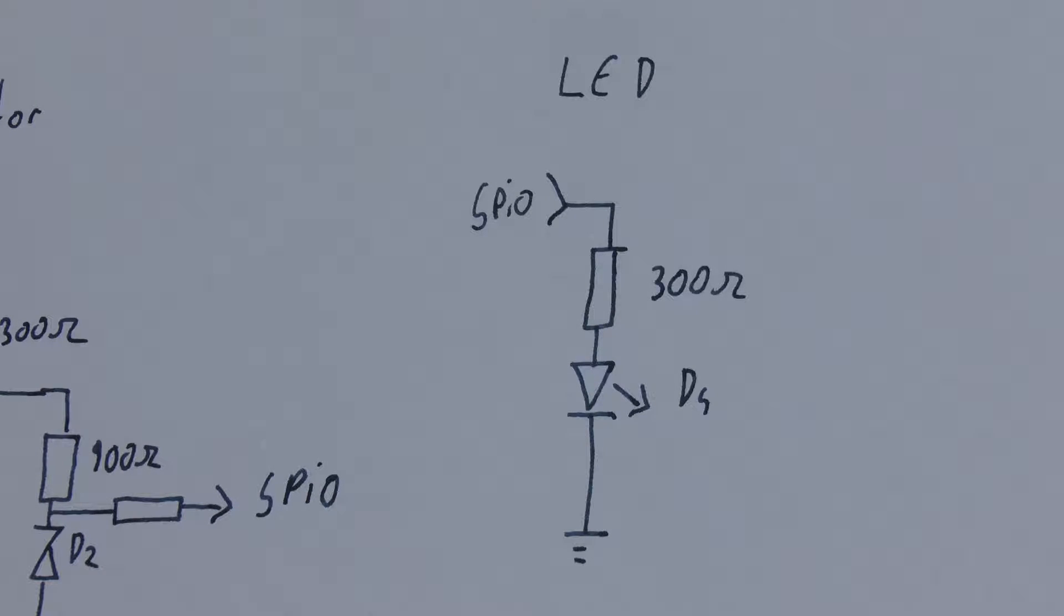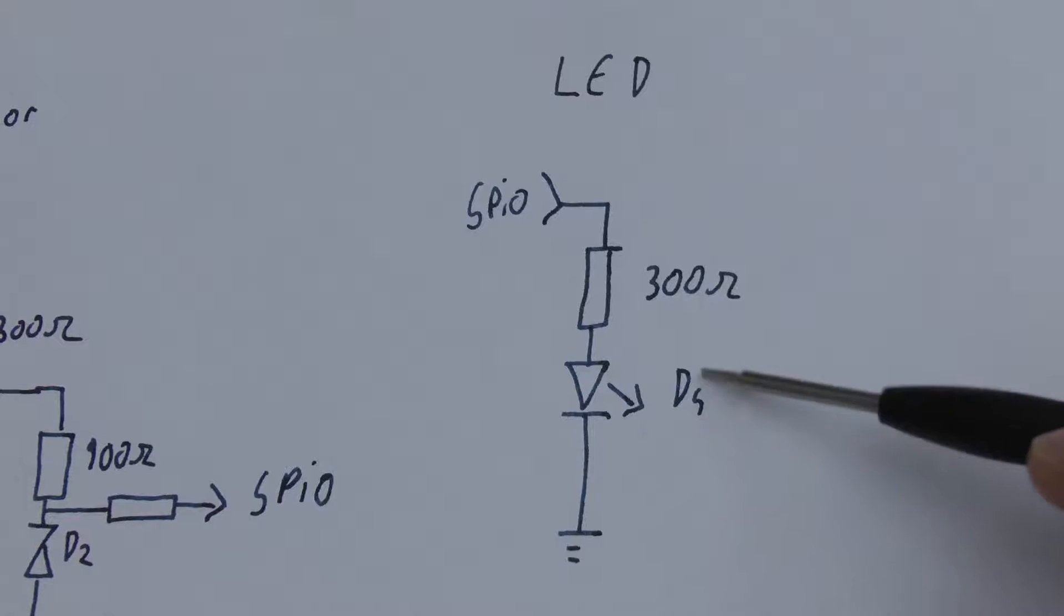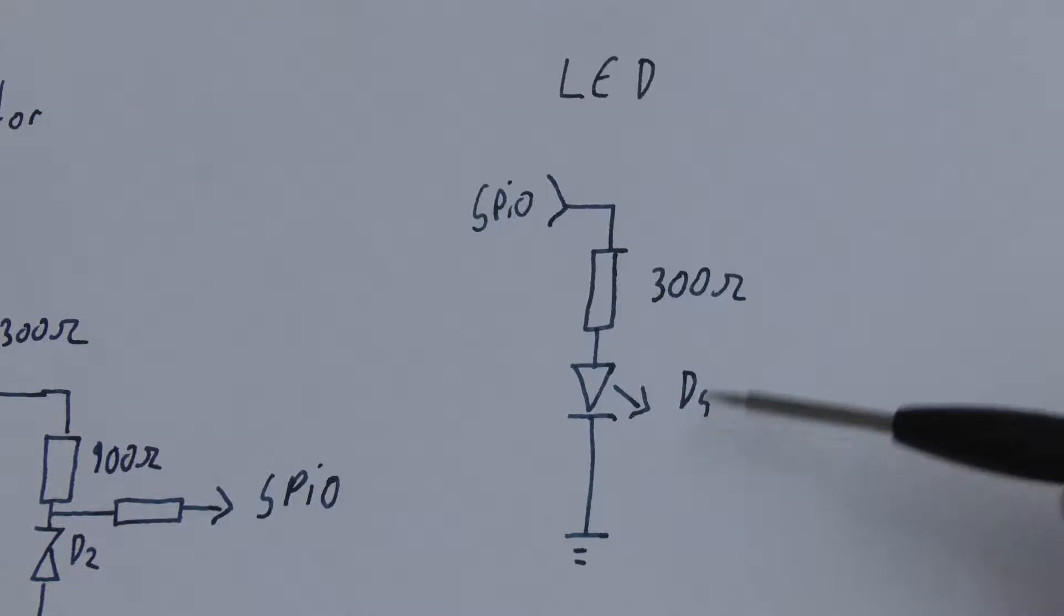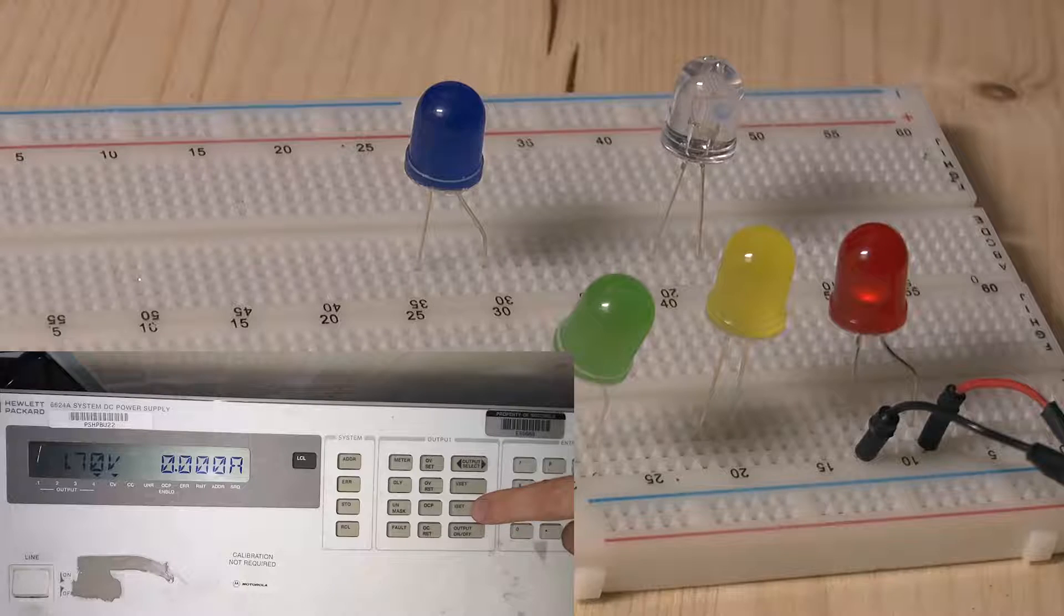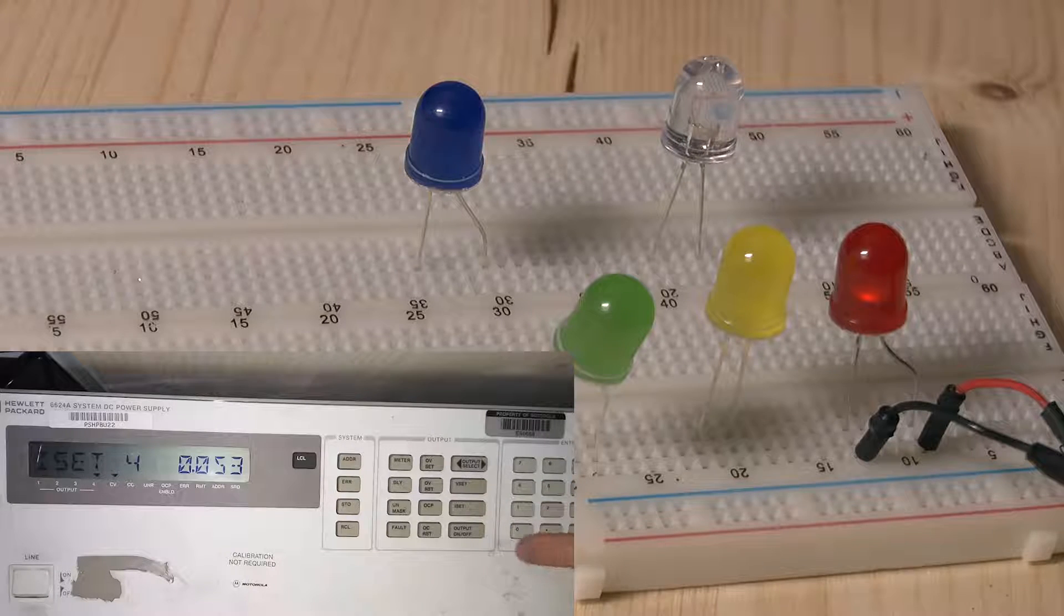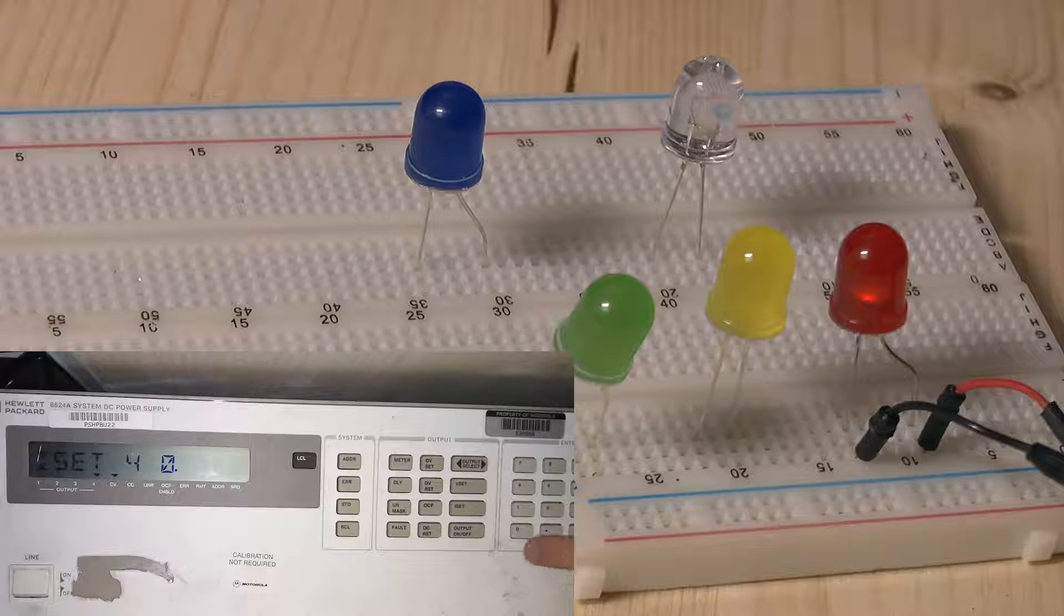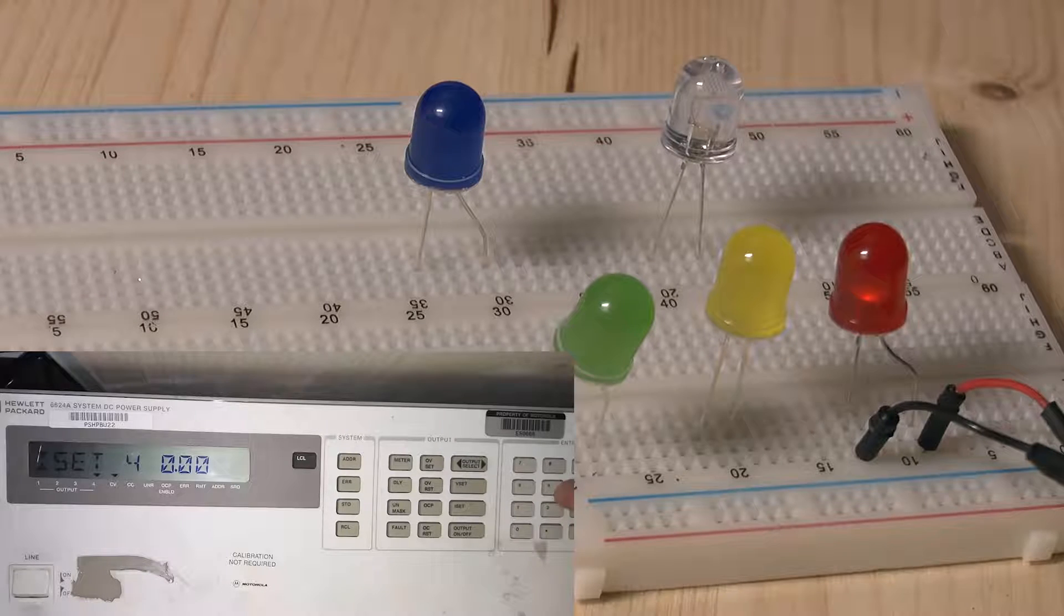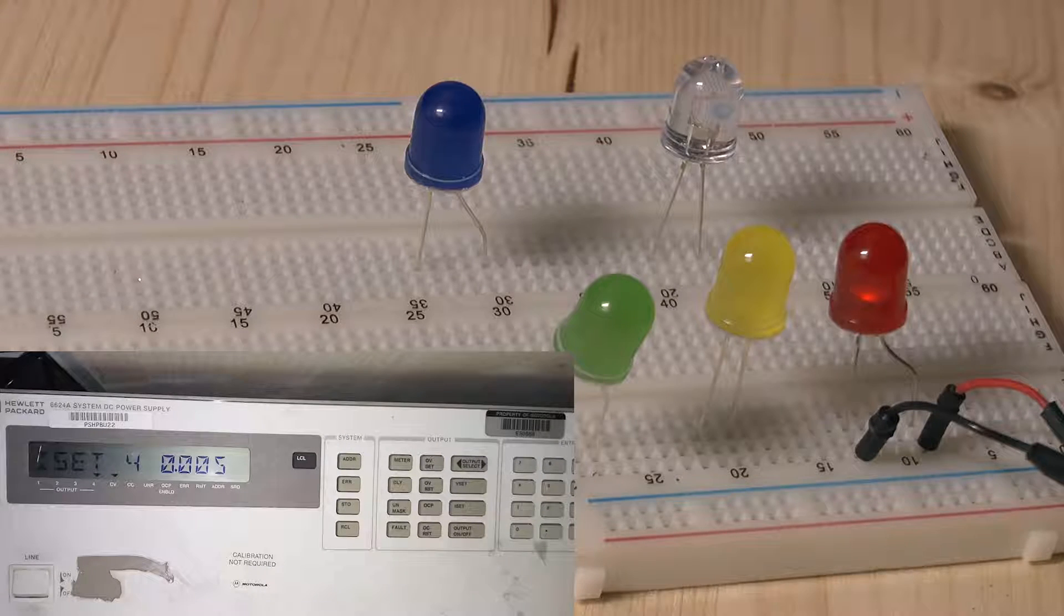Now the question is, what happens if we swap this LED out for a white or blue LED? Let us start out by setting the current of the power supply to 0.5 mA.